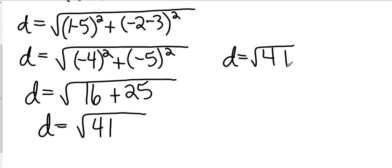Now if they wanted an actual distance and number, then you would take the square root of 41 and then round it to whatever they wanted. But that's not what they want to do in this case. They want you to just leave it as square root of 41.